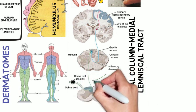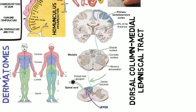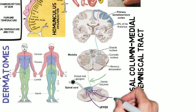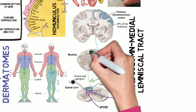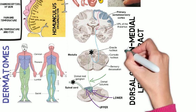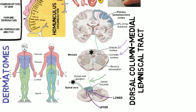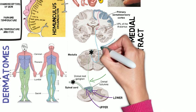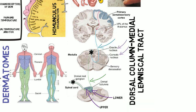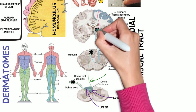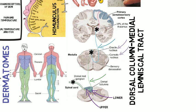The axon of the first-order neuron ascends in either the cuneate fasciculus for information from upper extremities, or the gracile fasciculus for information from lower extremities. The second-order neuron cell body is in the medulla — either the cuneate nucleus for upper body information or the gracile nucleus for lower body information. Axons decussate as internal arcuate fibers and ascend as the medial lemniscus, synapsing in the ventral posterior lateral nucleus (VPL) of the thalamus. The third-order neuron then projects from the VPL to the primary somatosensory cortex.